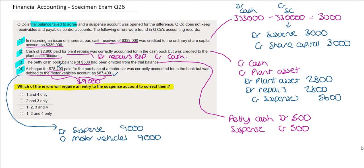Reviewing our question again, we needed to decide which of the errors will require an entry to the suspense account to correct them and we can see that the 1st, 2nd, 3rd and 4th entry all require an entry to the suspense account. Therefore the correct answer is the 3rd option.